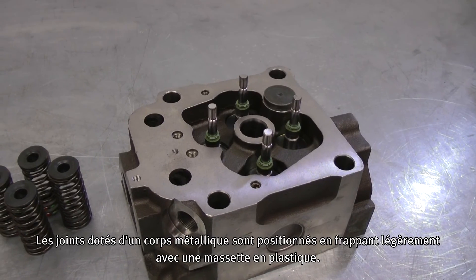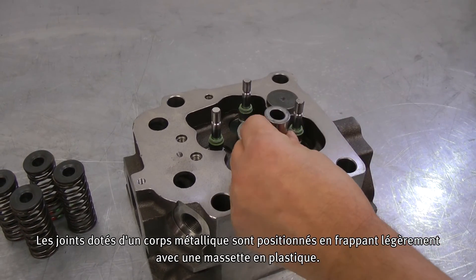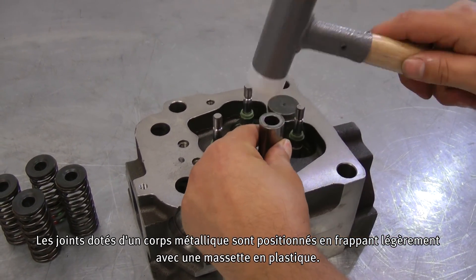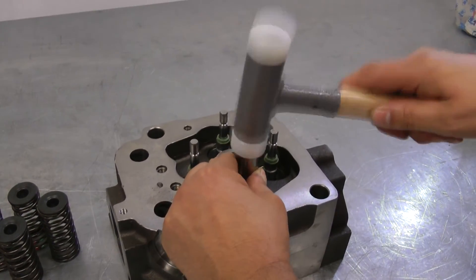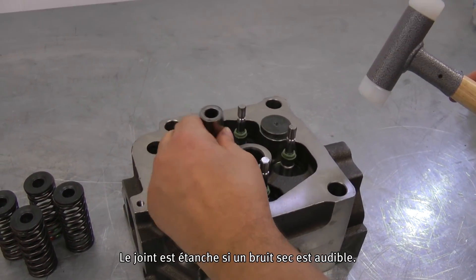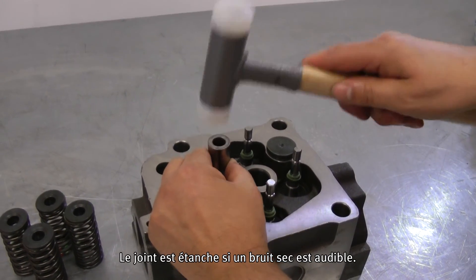Seals with plate girders are carefully placed in position with slight knocks by a plastic hammer. The seal is tight if a solid knocking noise is heard.